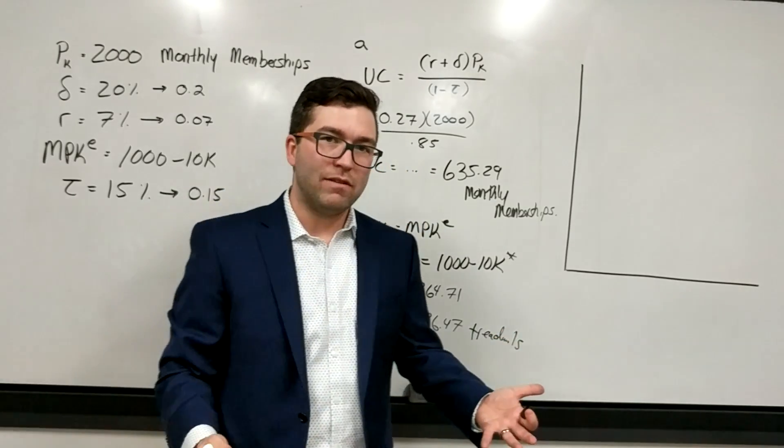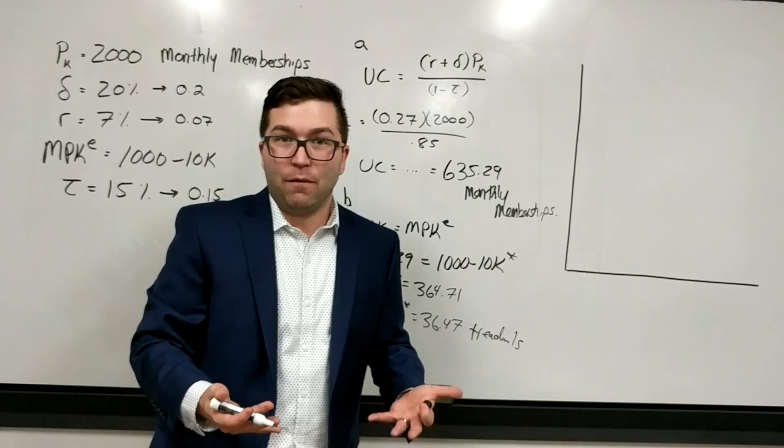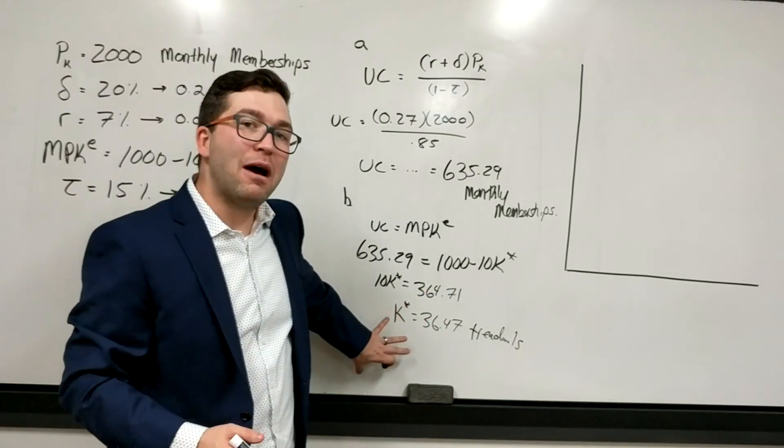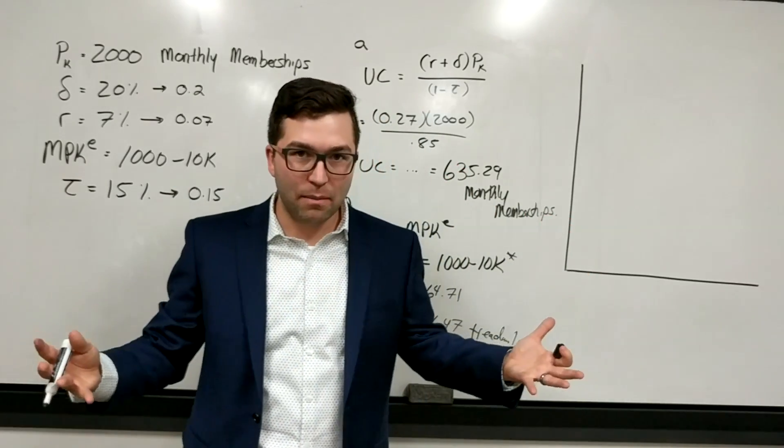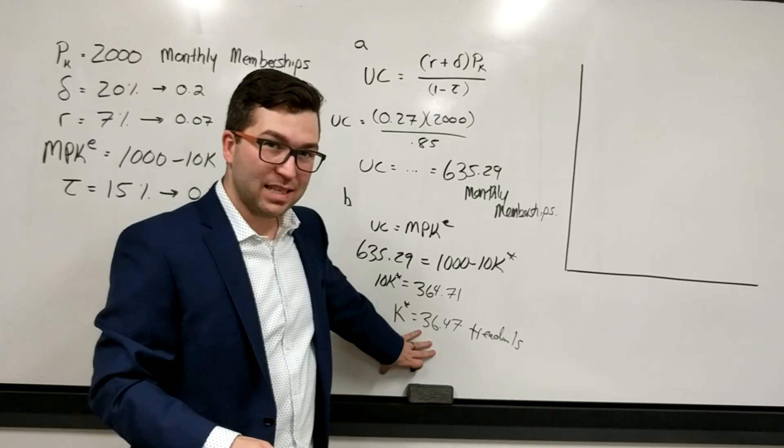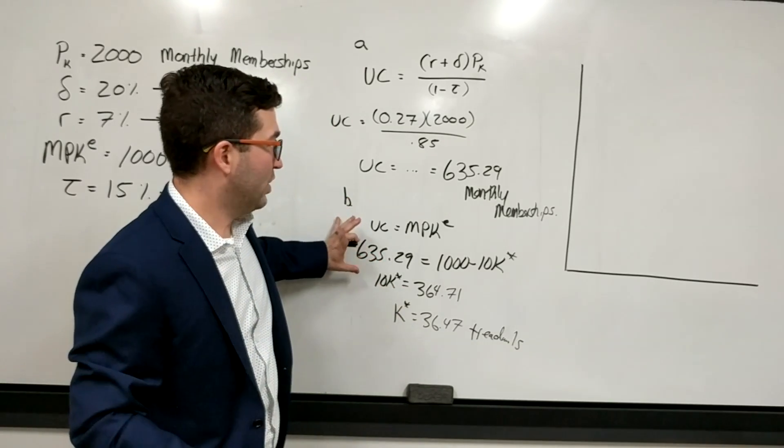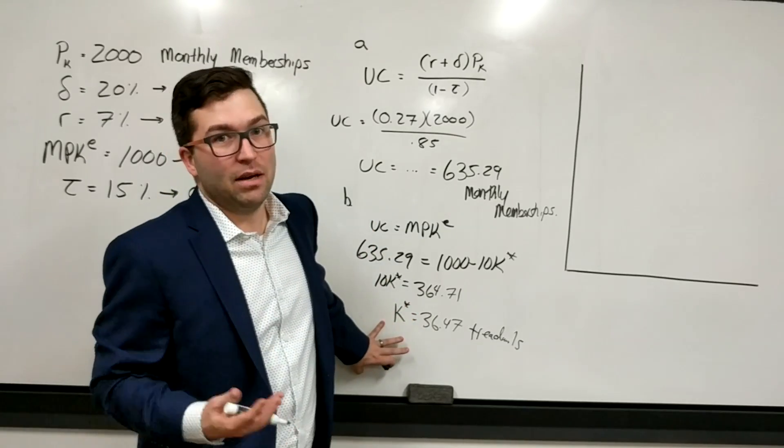How can you have 0.47 treadmills? Well, at the end of the day, you can't have, you know, 47 one-hundredths of a treadmill. But if we think this may be in terms of thousands or millions, or if you're looking at Planet Fitness as a whole for an entire company, who knows. Some people might say, well, let's round this down to 36. I'm more interested in you understanding the idea of what's going on with marginal cost equals marginal benefit. At the end of the day, the number's not a big deal to me.